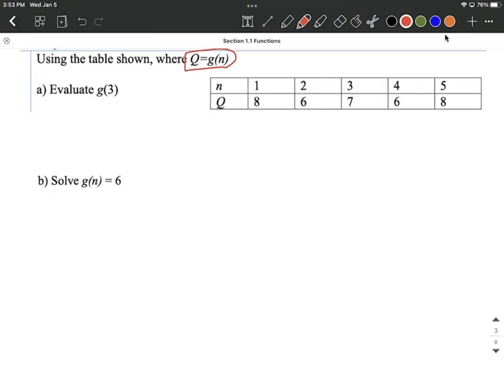So as we're trying to evaluate g of 3, notice that 3 is being input into the function that's inside the set of parentheses, so that's a value for n. So in this case for part a what we're going to be looking at is we're trying to find where is 3 for a value for n. We're looking at the top of this table, that first row.